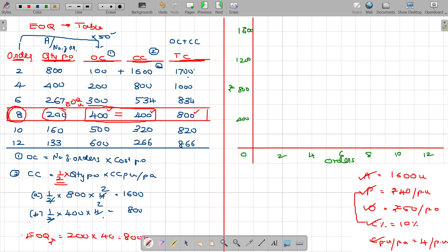Now I am going to plot ordering cost. To plot ordering cost: 2 orders come at 100, 4 orders at 200, 6 orders at 300, 8 at 400, then 500, then 600. Connecting these dots, this is ordering cost.